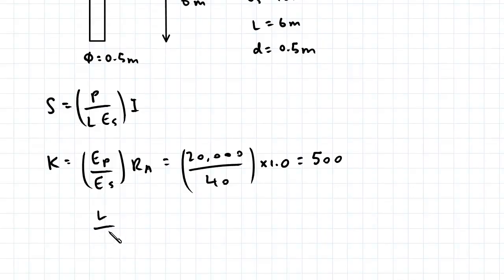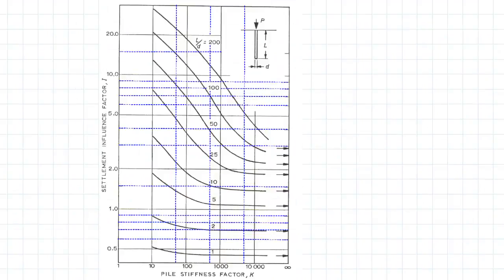Next we need to find the length to diameter ratio. So that's 6 over 0.5 which is 12. So let's go to this chart now.